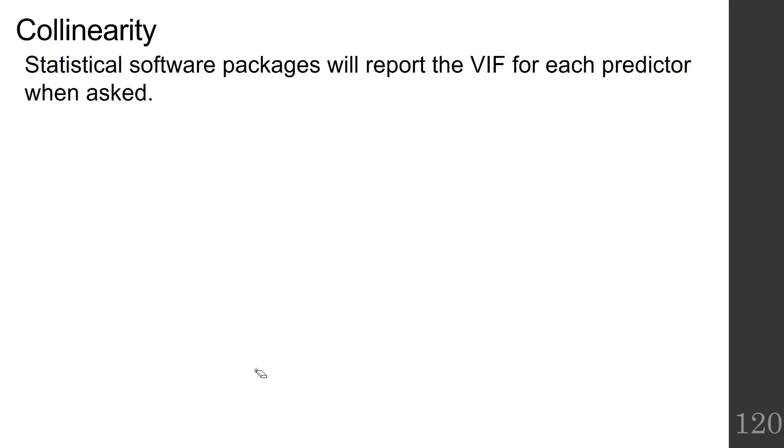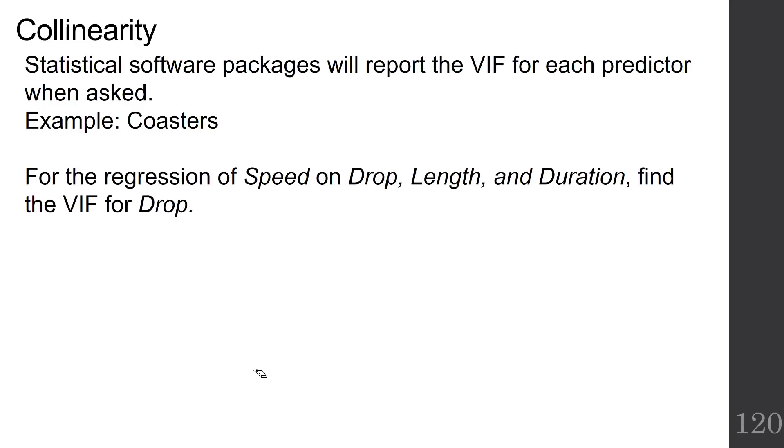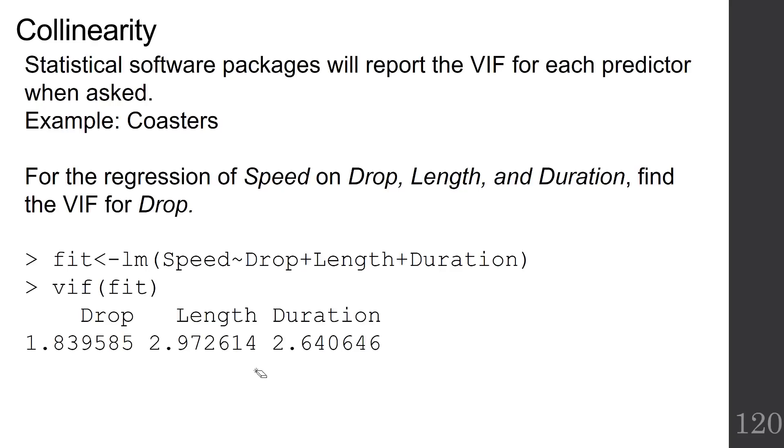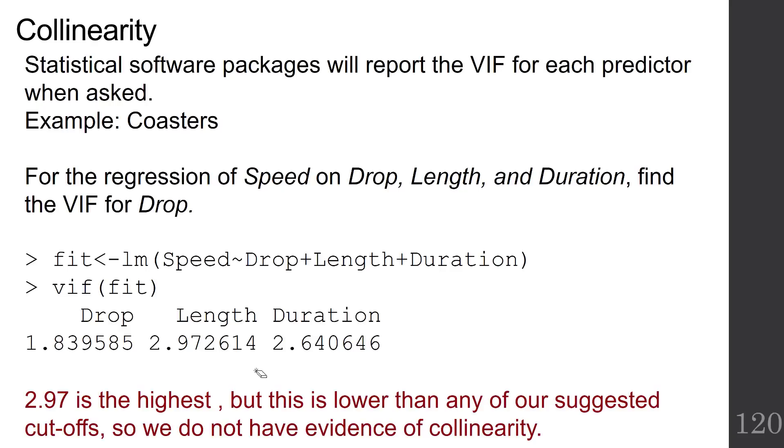Statistical software packages will report the VIF for each predictor when asked. For example, in our coaster dataset that we've been working with, for the regression of speed on drop, length, and duration, if we want to find the VIF for drop, we can simply fit our model in R, make sure we have the car library loaded, the car package loaded, do VIF of my fitted model, and it gives me the three variance inflation factors calculated for me. So the highest one is 2.97 for length, and that's lower than any of our suggested cutoffs. None of them are higher than 4, so we don't have evidence of collinearity here.